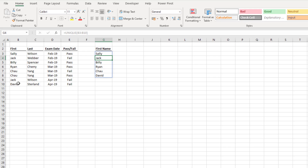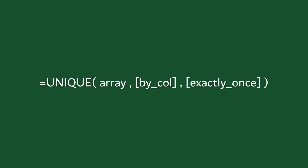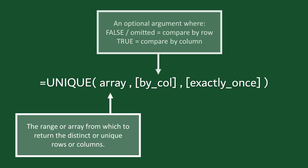Now that we have a basic understanding of how UNIQUE works, let's look at its arguments. UNIQUE has just three arguments, and the last two are optional and quite obscure, so you'll only use those occasionally. The three arguments are: array, bycol, and exactly_once. Array is the range or array to return values from. Bycol is optional — false means we compare data in rows, true means we compare data in columns, and it defaults to false. We'll see the impact of this in example four.